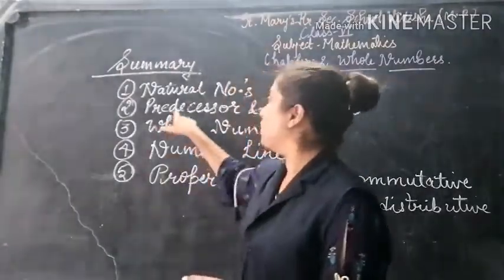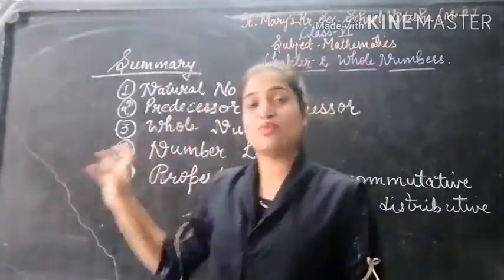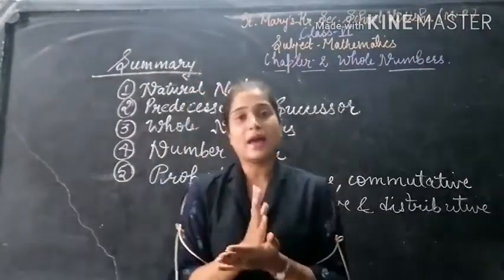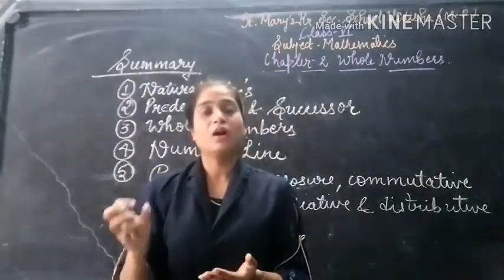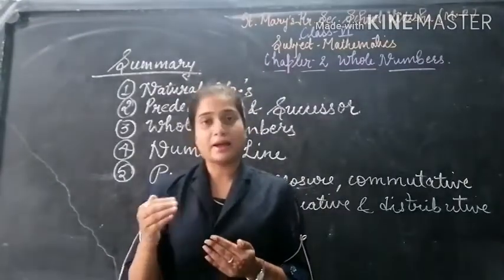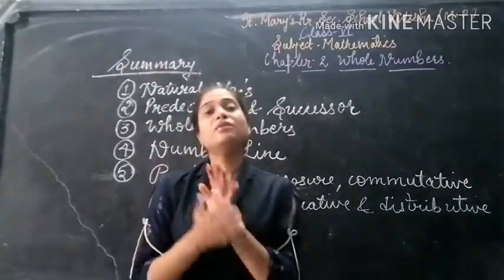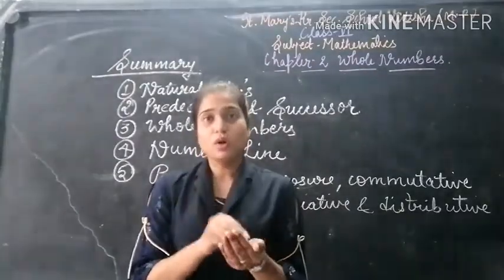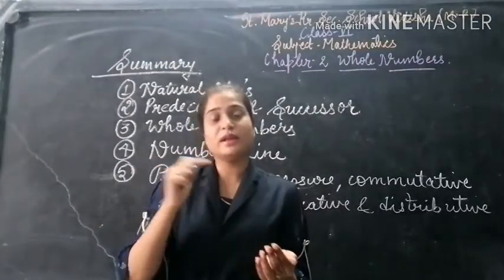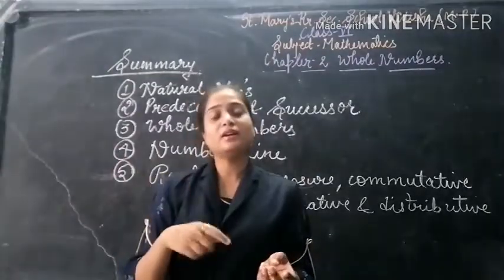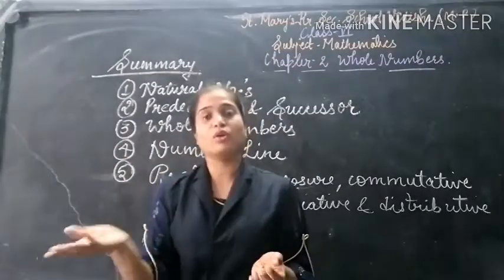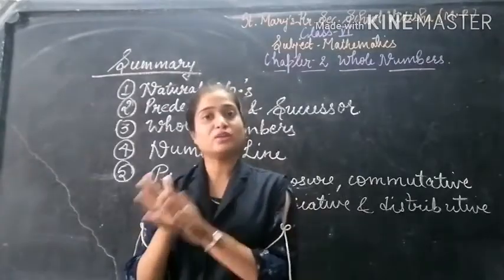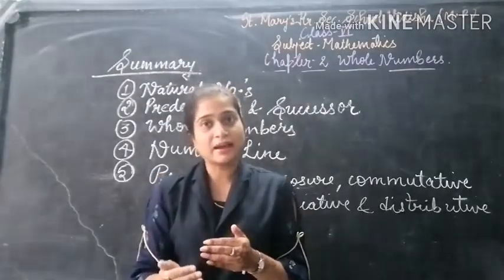The second thing we studied is predecessors and successors. When we add 1 to a natural number or a given number, we get the successor of that number. Suppose the number is 2; when we add 1 to 2 we get 3, when we add 1 to 3 we get 4. So when we add 1 to any natural number, we get the successor of that number.